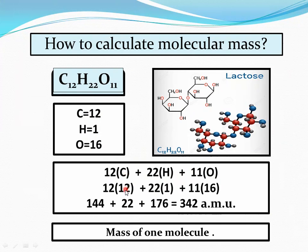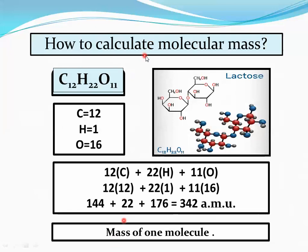Place the mass numbers: carbon 12, hydrogen 1, oxygen 16. Multiply each: 12 × 12 = 144; hydrogen 22 × 1 = 22; oxygen 11 × 16 = 176. Add them: 144 + 22 + 176 = 342 AMU. So the molecular mass of lactose (sugar) is 342 AMU. Remember, molecular mass means the mass of one molecule.